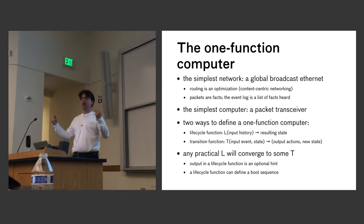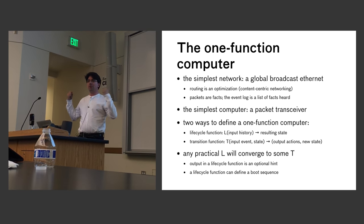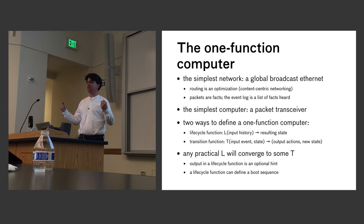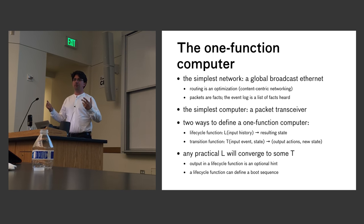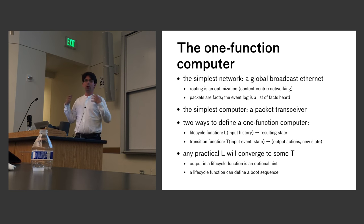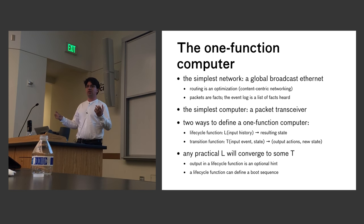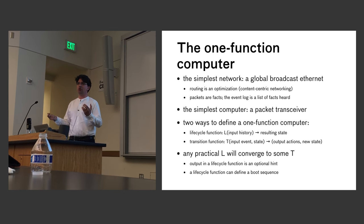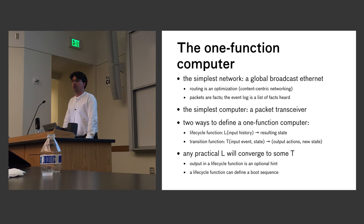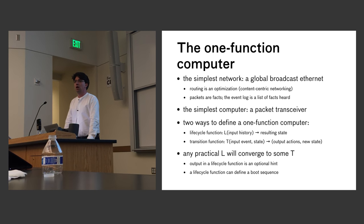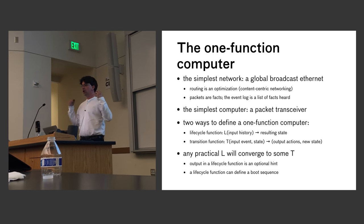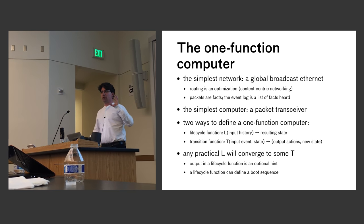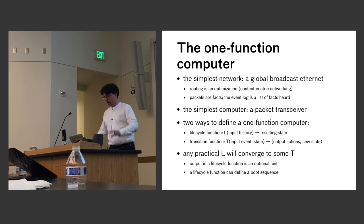If you have the keys to decrypt those packets, you use them. You can then say to this global party line, we'd like to optimize this — and you get back to routing. Routing is basically an optimization. Van Jacobsen has this great term, a content-centric network, where basically who sent the packet doesn't matter; what matters is what's in the packet.